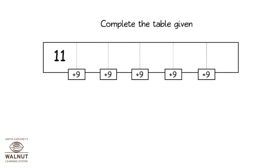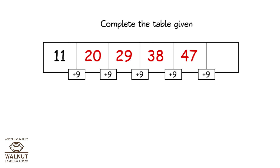Complete the table given. Starting at eleven, skip count by nine: eleven, twenty, twenty-nine, thirty-eight, forty-seven, fifty-six.